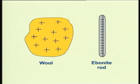Similarly, an ebonite rod has a greater affinity for electrons than wool. Therefore, when we rub an ebonite rod with wool, the wool will give up electrons to the ebonite rod. So the ebonite rod will become negatively charged and the wool will become positively charged. Thus, we have seen how objects become electrically charged.